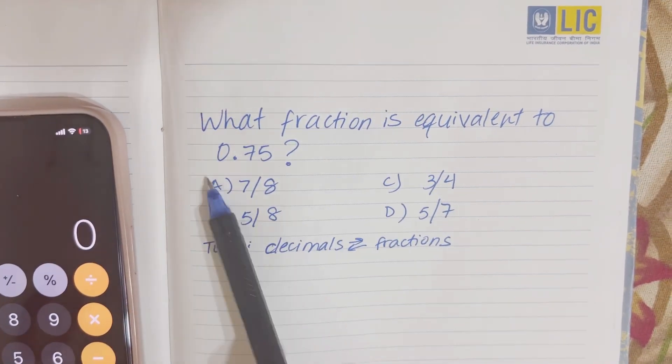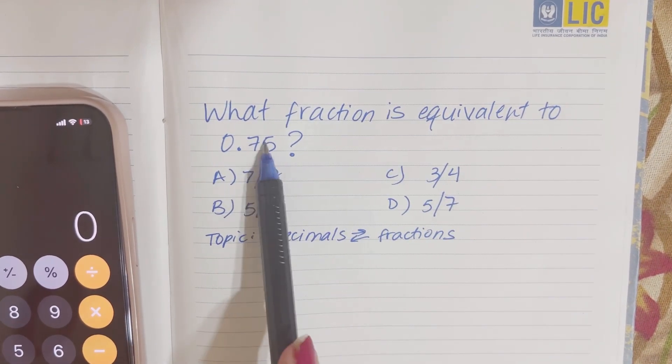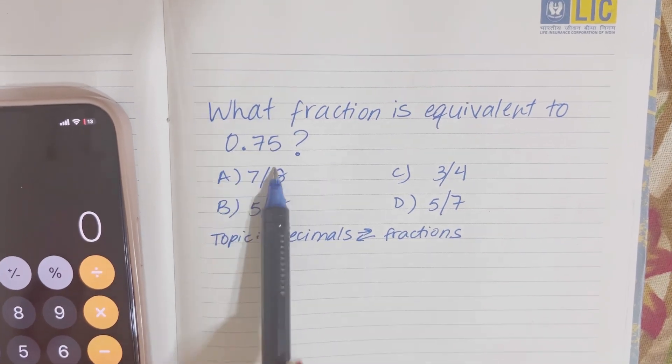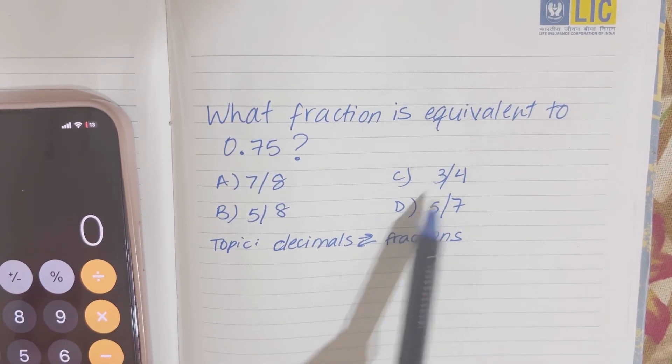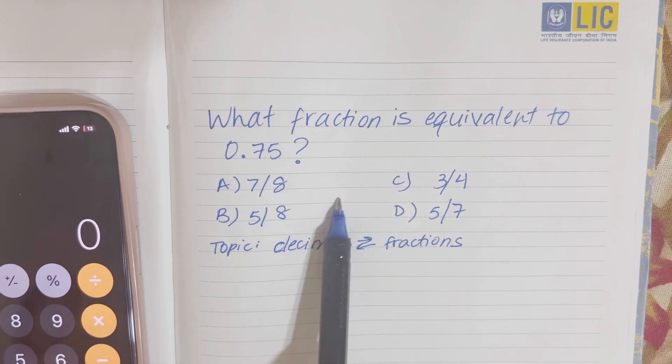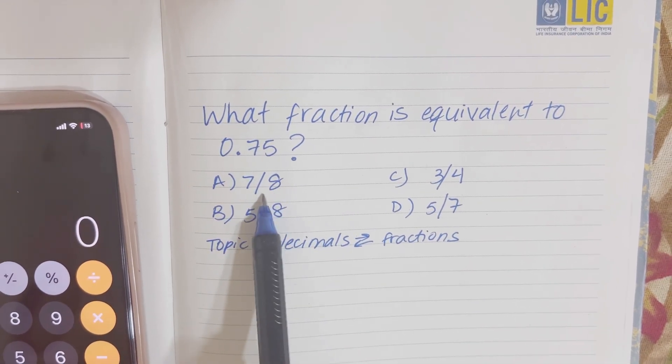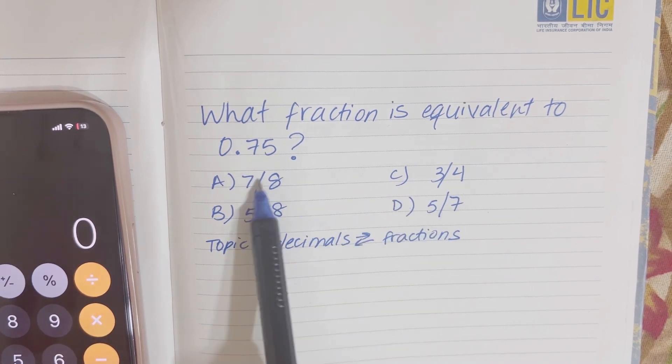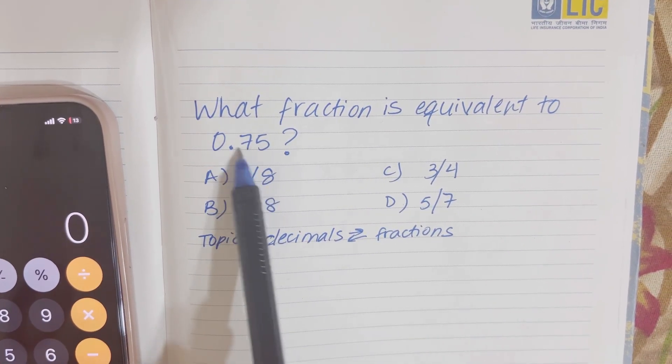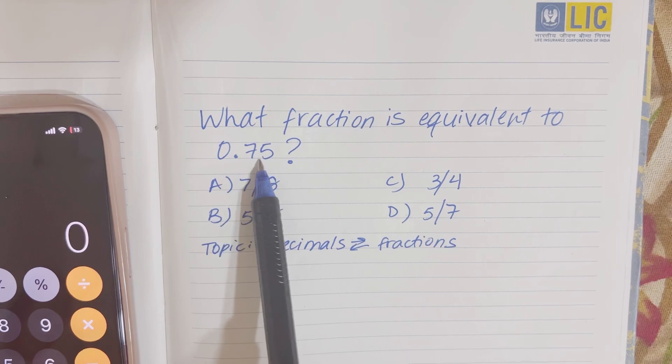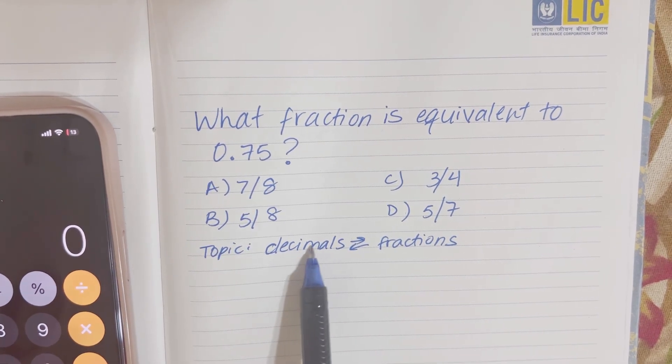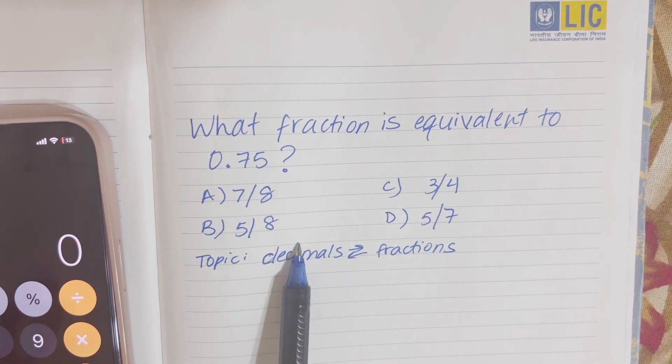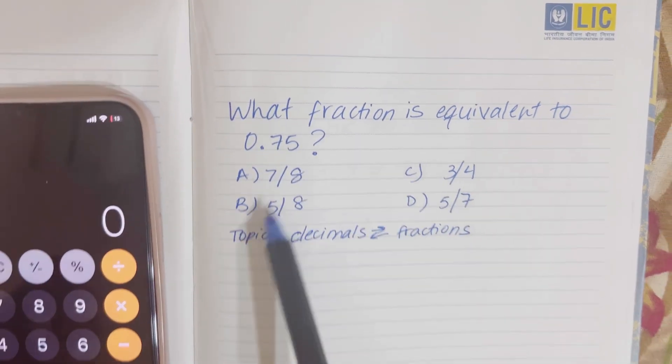The next one says what fraction is equivalent to 0.75? Remember that HESI is multiple choice questions. What I would do is put every number in the calculator, like every fraction divided, and see which one gives me 0.75. You should know how to convert decimals to fractions and fractions to decimals. I'm going to show you.